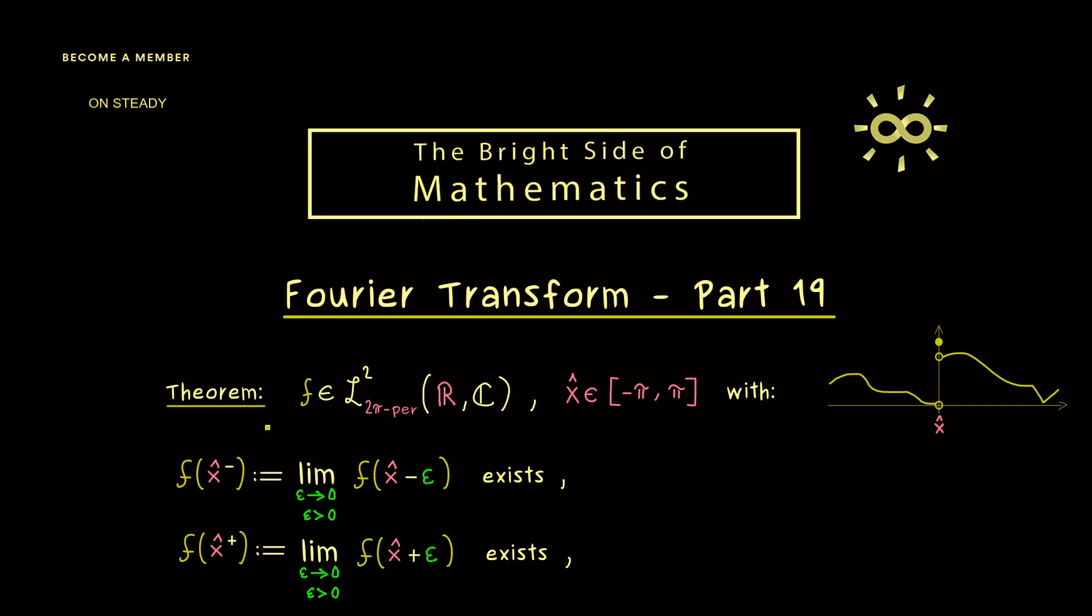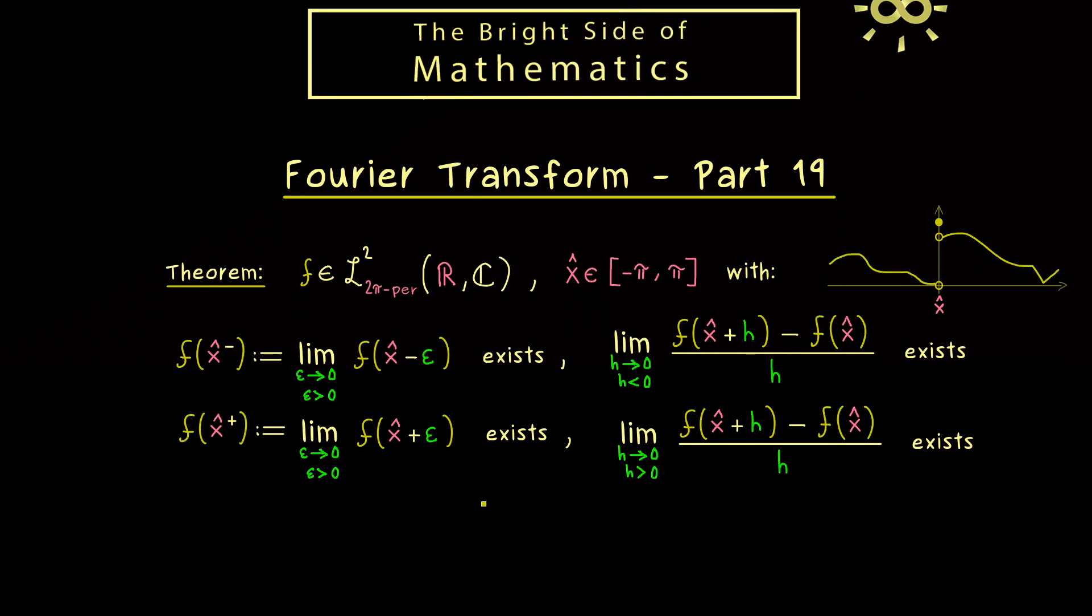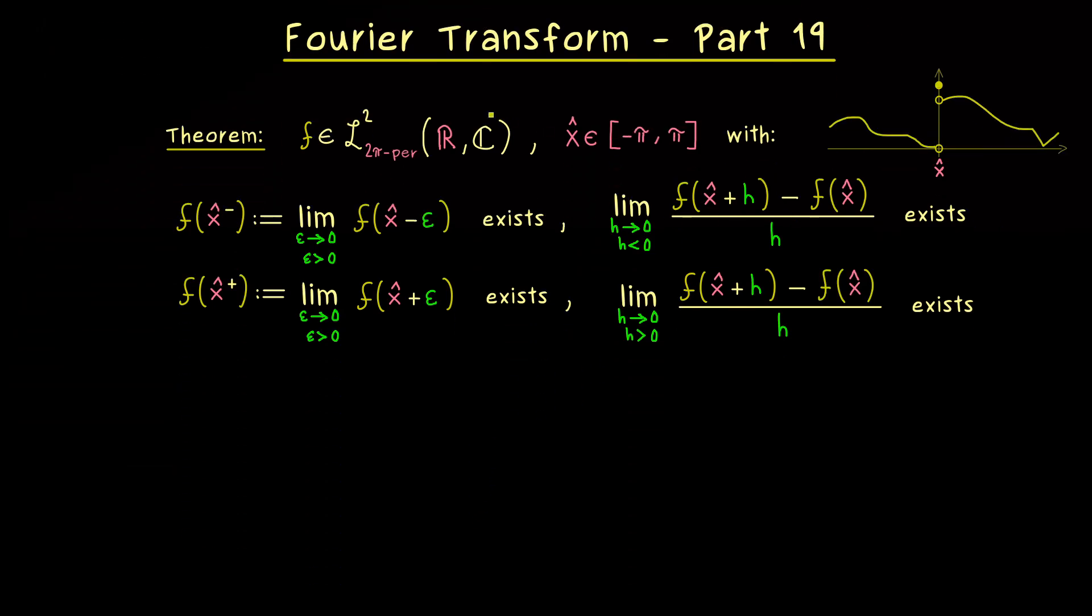On the one hand if we approach the function from the left hand side the limit has to exist. And if we approach the function from the right hand side the limit also has to exist. And on the other hand we also want to have existence for the slopes when we approach x hat as well from right and left. And there I should emphasize again we don't need any equalities of the values, we just need the existence of these 4 limits. And indeed this is all we need such that we can say something about the pointwise convergence of the Fourier series at the point x hat.